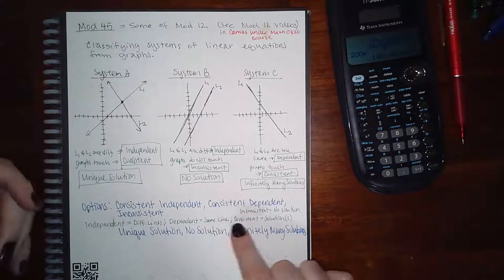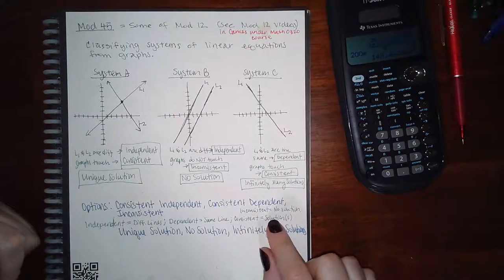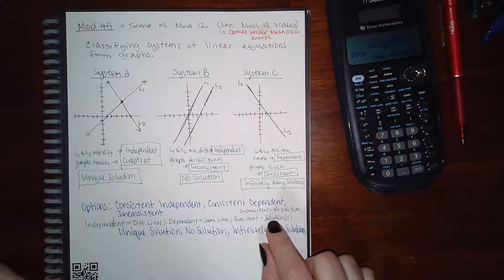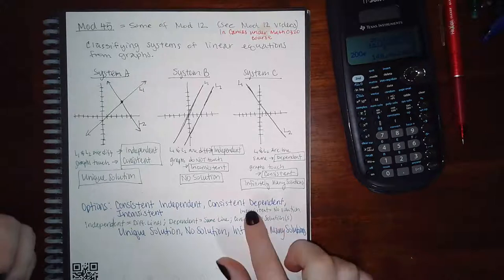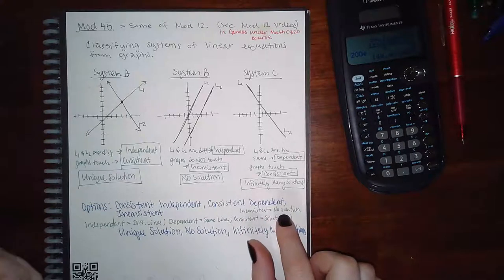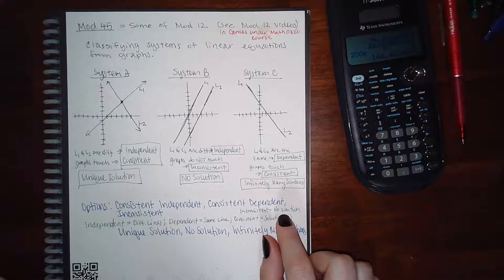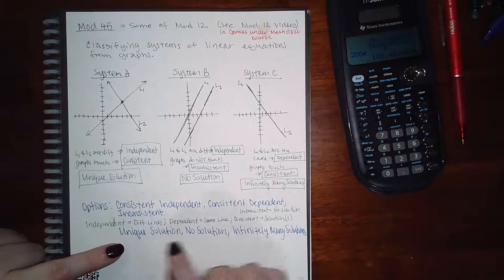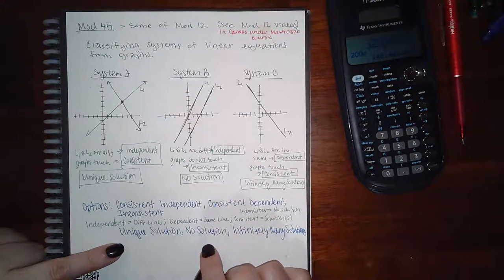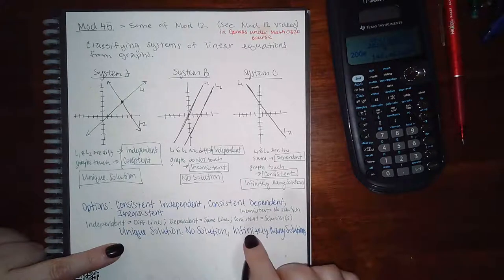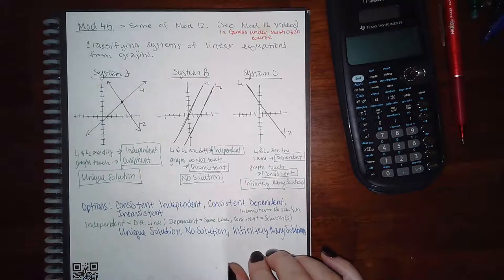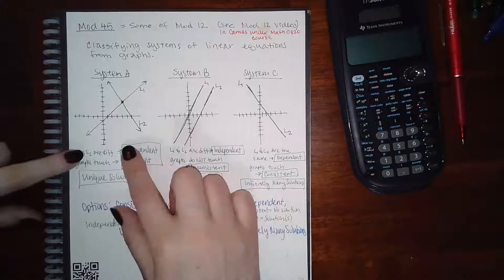Inconsistent means they don't touch at all, so there's no solution. For unique solution, it's when the graphs only touch at one point. No solution is when the graphs don't touch at all. And infinitely many solutions is when they touch all over the entire line.